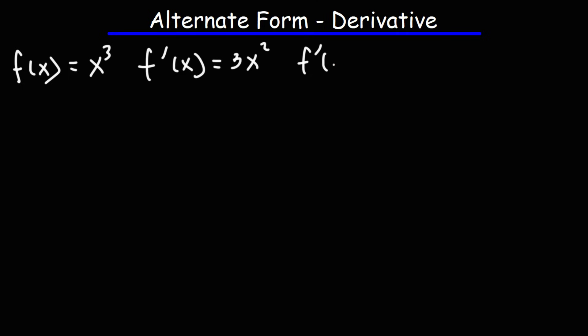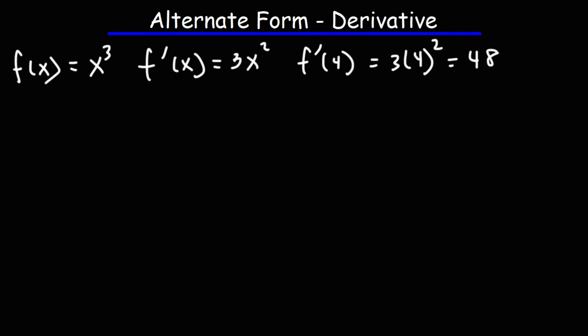Now let's say we plug in some point — let's say 4. This is going to be 3 times 4 squared, which is 3 times 16, that's 48. So this is the derivative of f of x as a function. And this number, when we evaluate the derivative at a point, we get the slope of the tangent line.